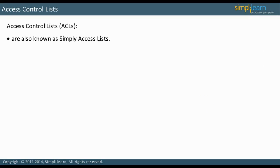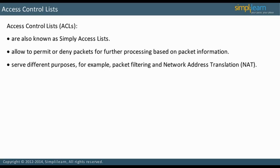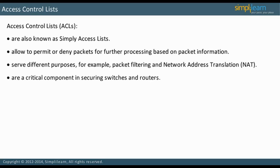Access control lists, or ACLs, also called simple access lists, allow you to permit or deny packets for further processing based on packet information. They serve many purposes, for example, packet filtering and NAT. This lesson will address only router access lists and provide a foundation for in-depth learning about other types of access lists in the future. ACLs are a critical component in securing switches and routers.